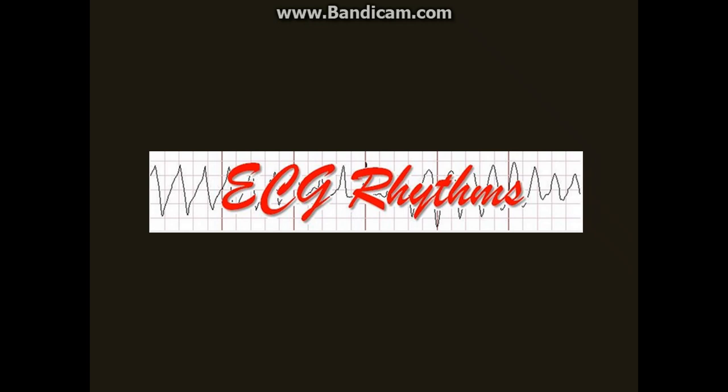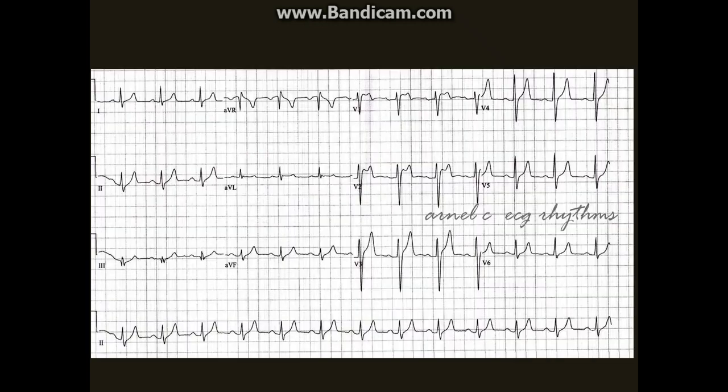Hello, this is Arnold again of EKG Rhythms. In this blog I will feature an EKG pattern that mimics myocardial infarction. A patient came with a history of chronic kidney disease due to pleuritic chest pain for two days. There were no fever and chills, vital signs were stable, and oxygen saturation was at 99% on room air. Is this patient having an acute myocardial infarction?